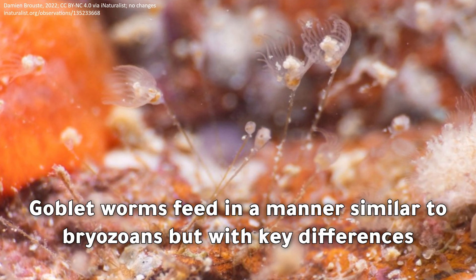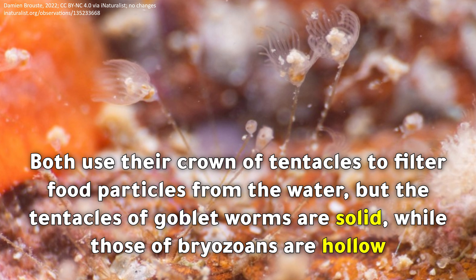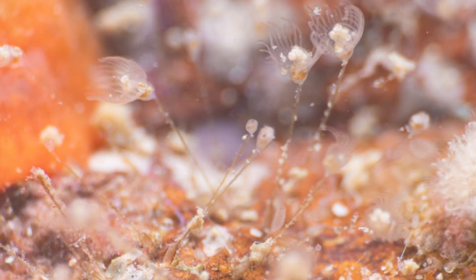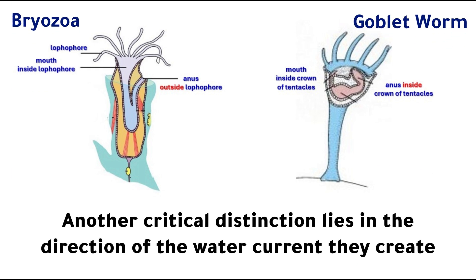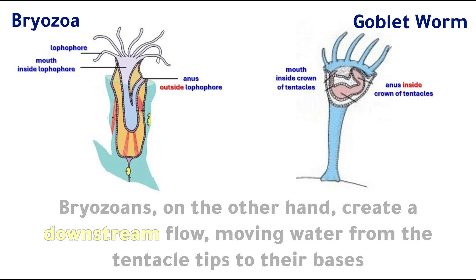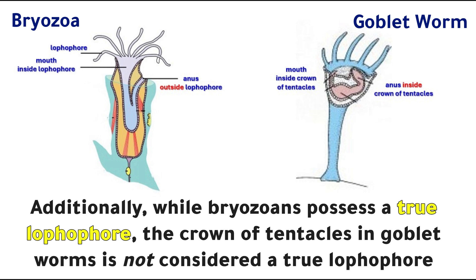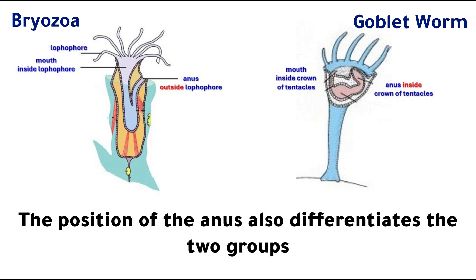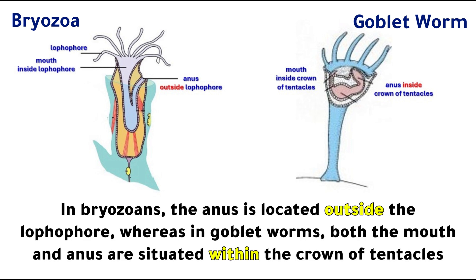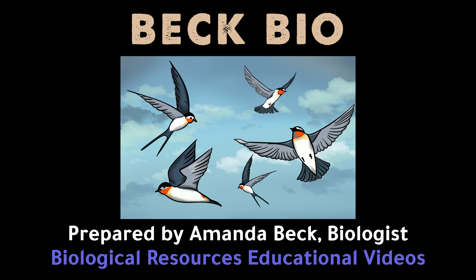Goblet worms feed in a manner similar to bryozoans but with key differences. Both use their crown of tentacles to filter food particles from the water, but the tentacles of goblet worms are solid while those of bryozoans are hollow. Another critical distinction lies in the direction of the water current: goblet worms generate an upstream flow, drawing water from the bases of their tentacles toward the tips, whereas bryozoans create a downstream flow, moving water from the tentacle tips to their bases. Additionally, while bryozoans possess a true lophophor, the crown of tentacles in goblet worms is not considered a true lophophor. The position of the anus also differentiates the two groups: in bryozoans the anus is located outside the lophophor, whereas in goblet worms both the mouth and anus are situated within the crown of tentacles.